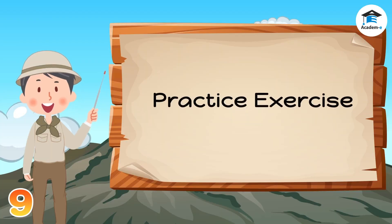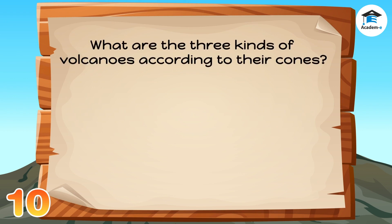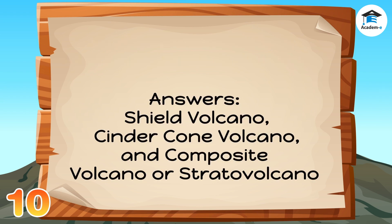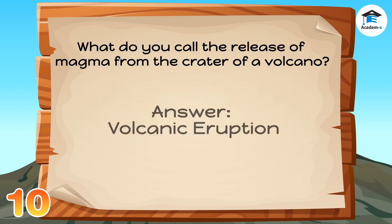Practice Exercise. What is an opening in the Earth's crust that releases lava, rocks, ashes, and gases during an eruption? The answer is Volcano. What are the three kinds of volcanoes according to their cones? The answers are Shield Volcano, Cinder Cone Volcano, and Composite Volcano or Stratovolcano. What do you call the release of magma from the crater of a volcano? The answer is Volcanic Eruption.